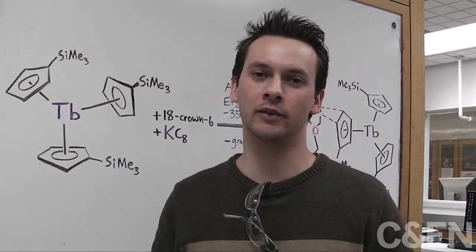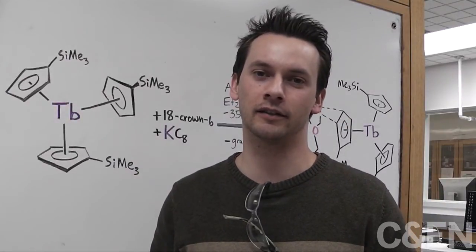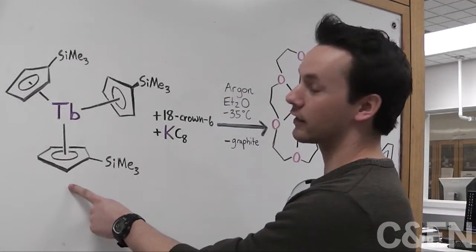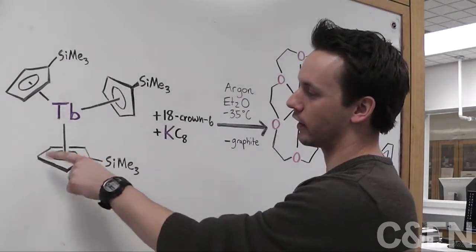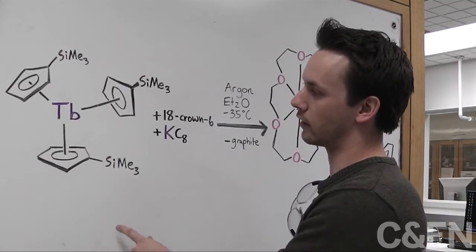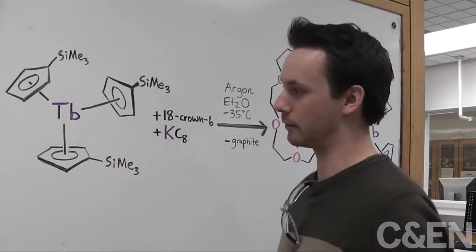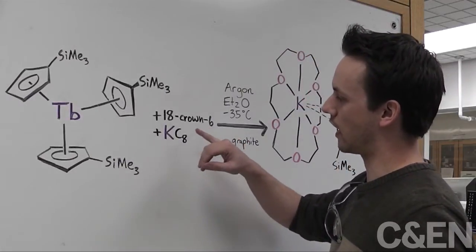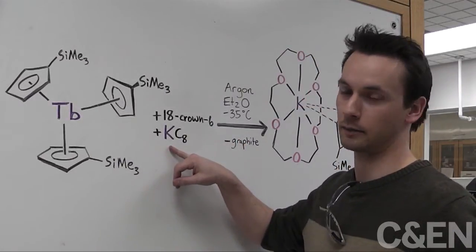UC Irvine graduate student and team member Matthew McDonald describes the synthesis. We'll be starting with a trivalent terbium precursor that has 3 ligands, which we call CP prime, around it. So Tris CP prime terbium. And we're going to add 18 crown 6 to that and reduce it with potassium graphite.